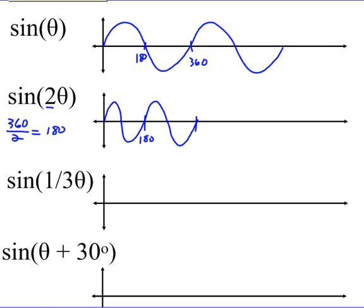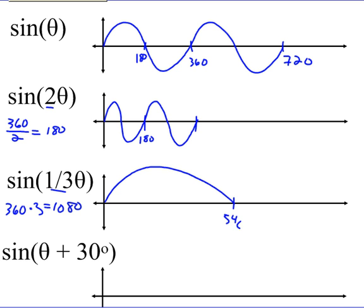When I am dividing inside — so in sine of (1/3)θ — we are doing a horizontal stretch. My normal period of 360 gets multiplied by 3, and I get 1080. I only get half of my cycle by the time I get to 540, and then it keeps going way out there.